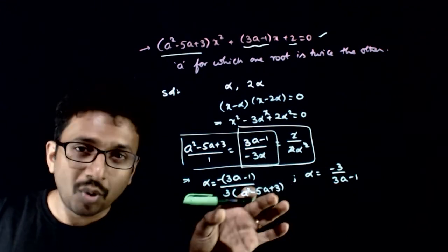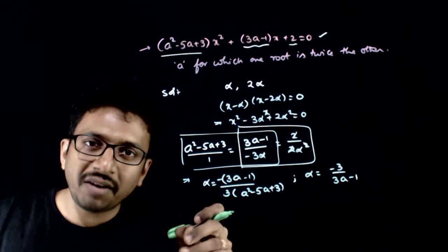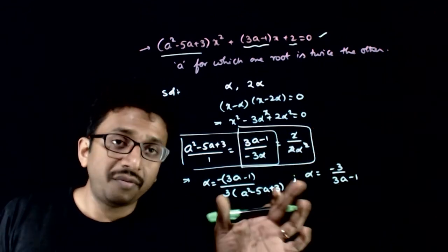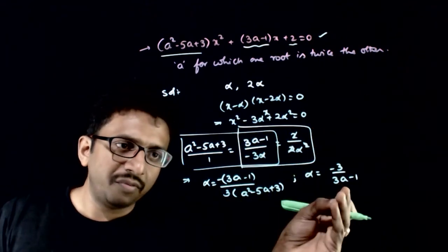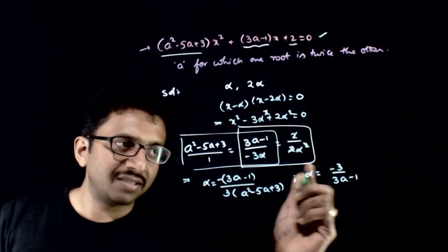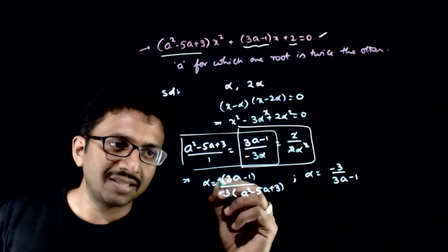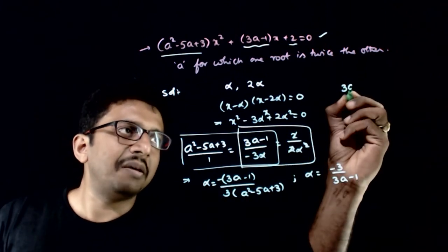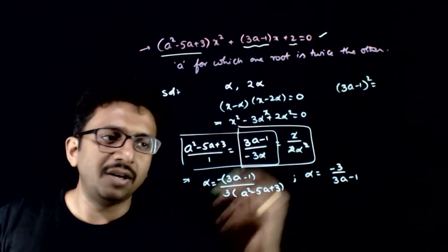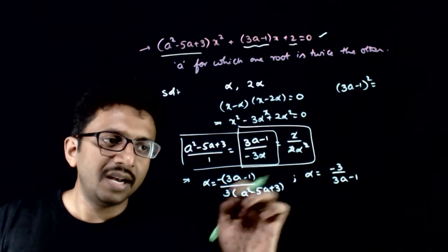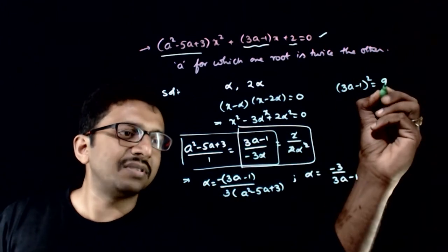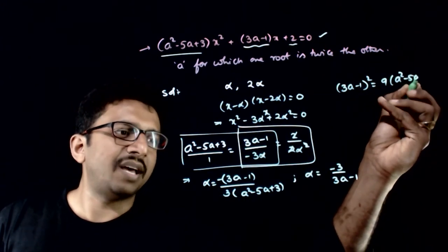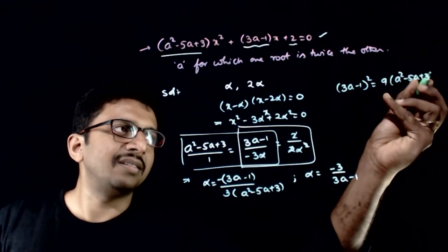Both expressions should be equal to alpha, so let us equate these two. If you equate these two and cross-multiply, the minus and minus get cancelled. So (3a - 1)² is equal to 9 times (a² - 5a + 3).